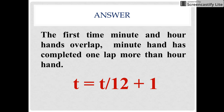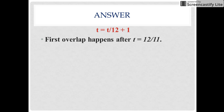Let's see the solution. We know that when the minute hand and the hour hand overlap for the first time, the minute hand would have travelled one lap more than the hour hand. So in T time, the minute hand covers T laps, the hour hand would have covered T/12 laps, and this one extra lap is what the minute hand would have travelled. On solving this equation, T comes out to be 12/11.